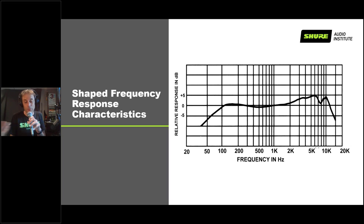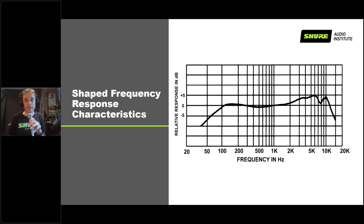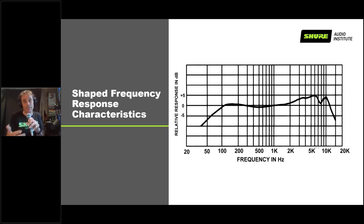Consonants are what allow us to understand speech — vowels don't matter as much, which is why you can understand whispering. The resonance in the ear canal is around 4 kHz, which is where intelligibility that allows us to communicate lives. The SM58 became a hit with rock bands in the 60s because concerts got louder and that presence peak helped the vocal cut through. There's also a dip above 10 kHz — most frequencies above 10,000 Hz offer nothing in terms of intelligibility, though they may sound more natural.